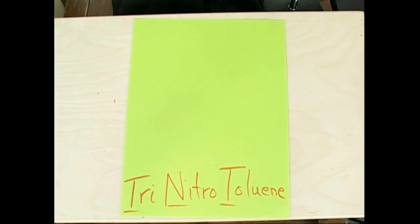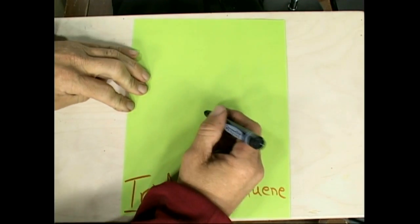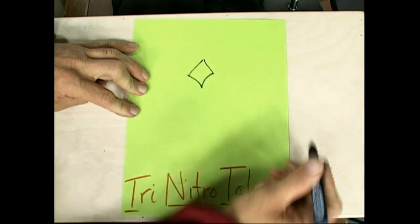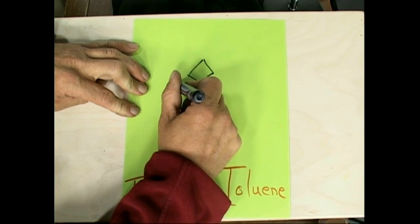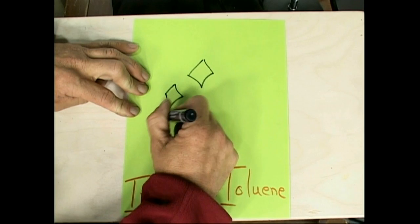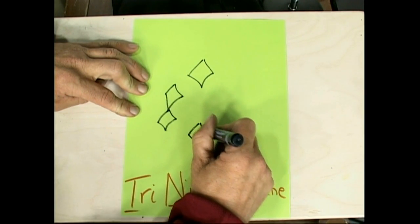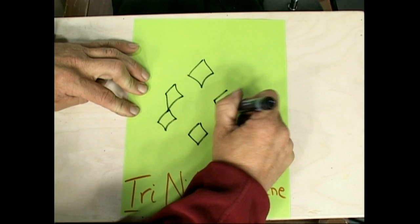Nitro TNT, that's an aromatic benzene ring, so let's just do our traditional ring here. One diamond, two diamonds on the side, one on the bottom, two diamonds on the side.